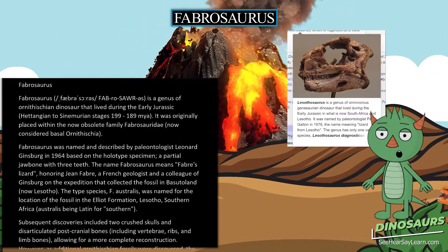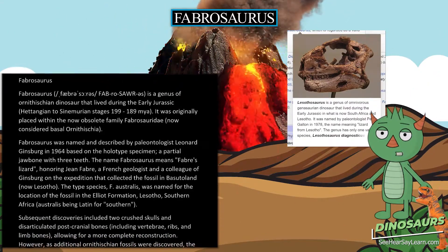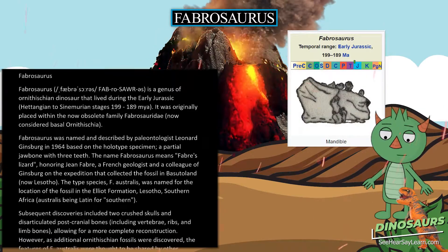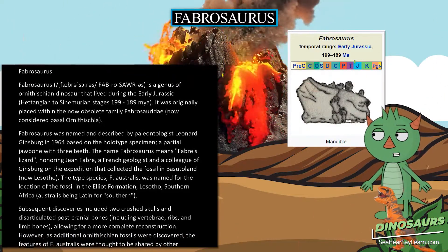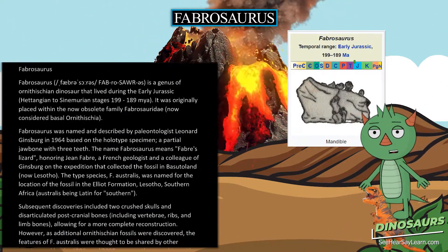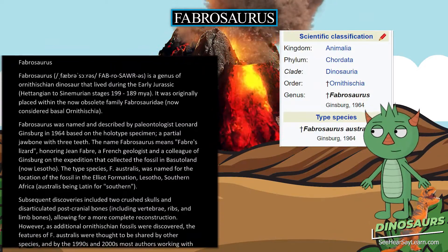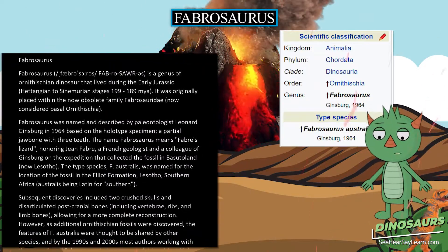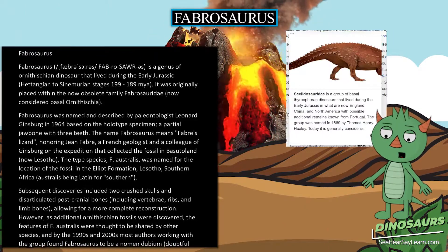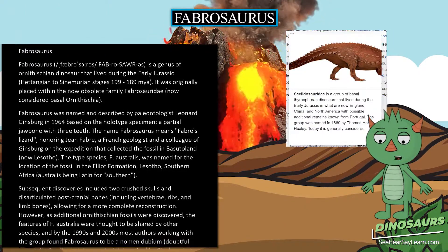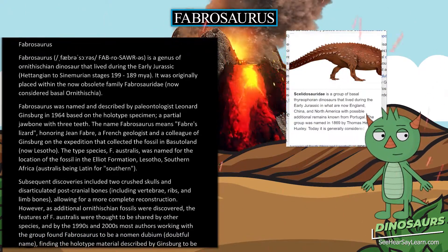Fabrosaurus was named and described by paleontologist Leonard Ginsberg in 1964, based on the holotype specimen — a partial jawbone with three teeth. The name Fabrosaurus means Fabre's lizard, honoring Jean Fabre, a French geologist and colleague of Ginsberg on the expedition that collected the fossil in Basutoland, now Lesotho.